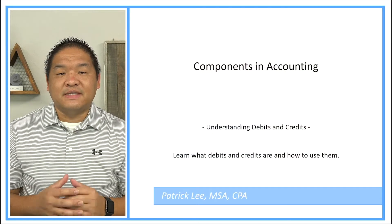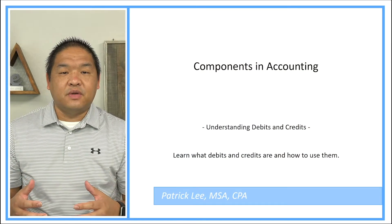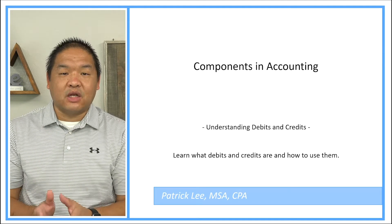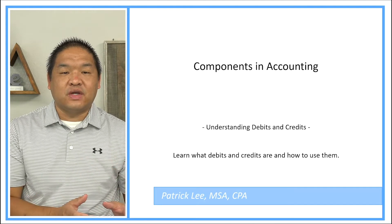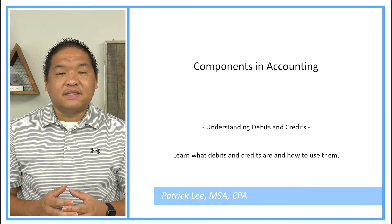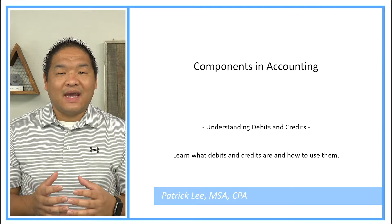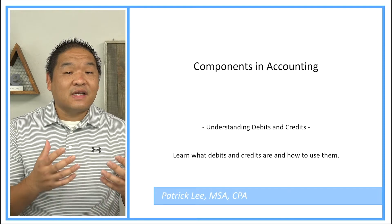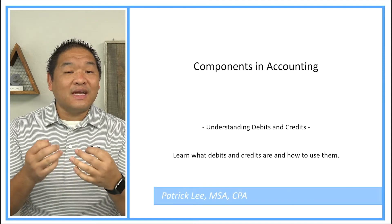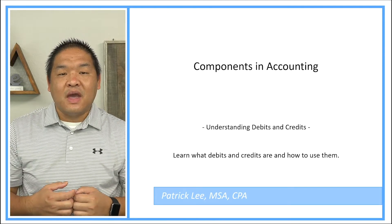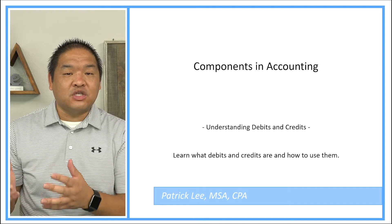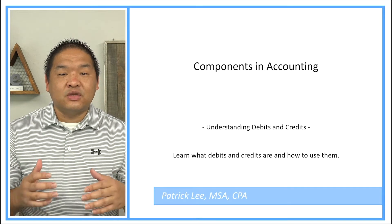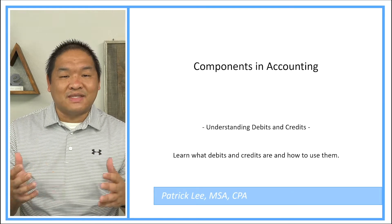In this series, we're going to help you understand debits and credits as well as how we as accountants do journal entries and the relationship between both debits and credits as well as journal entries. The importance of all of this is that as accountants, we take economic events or transactions that the company does on a daily basis, and we need to have some way to take that data, put it into the accounting information system, and produce information that is useful to decision makers.